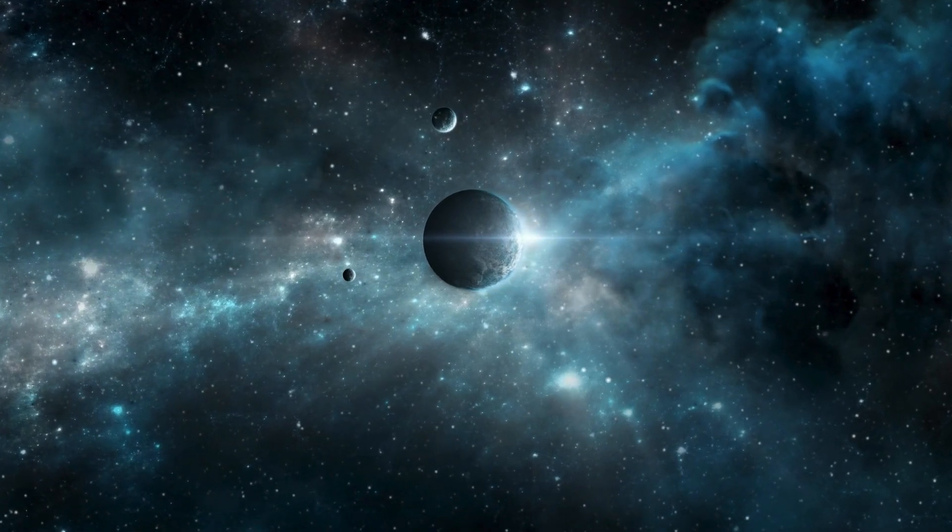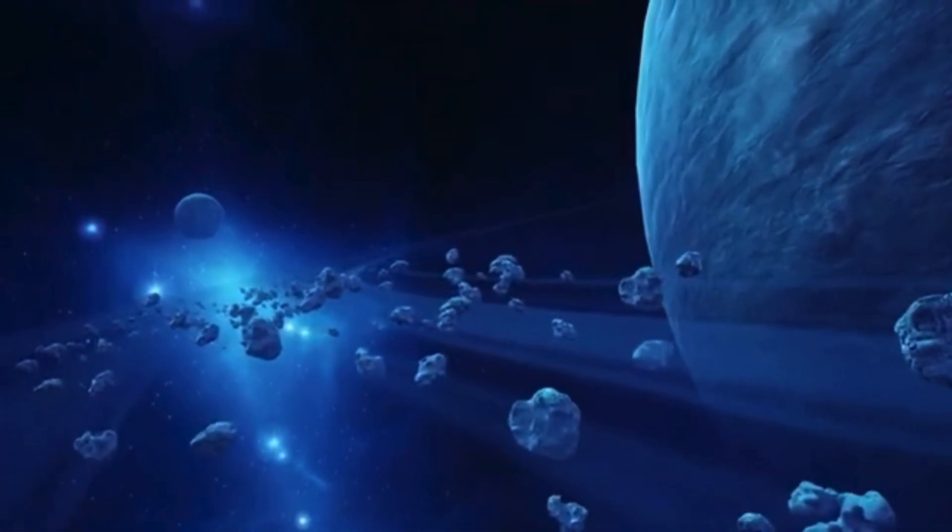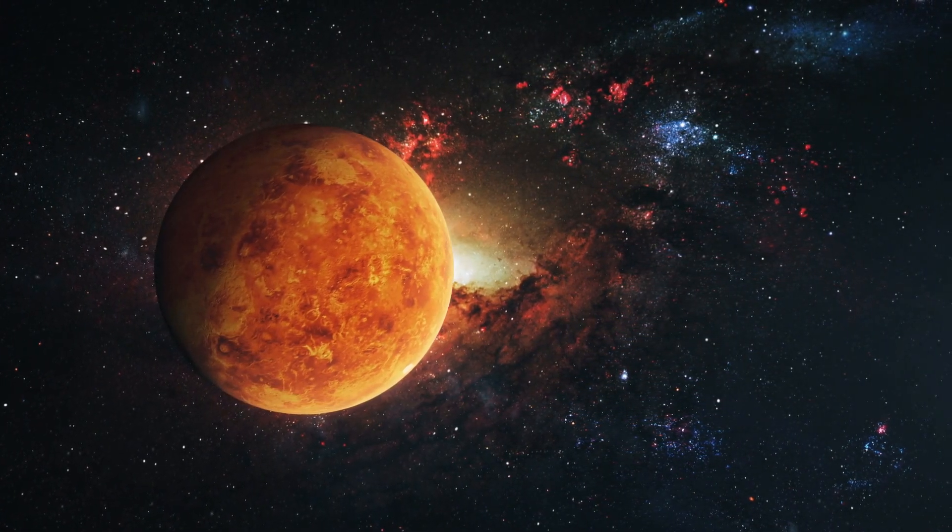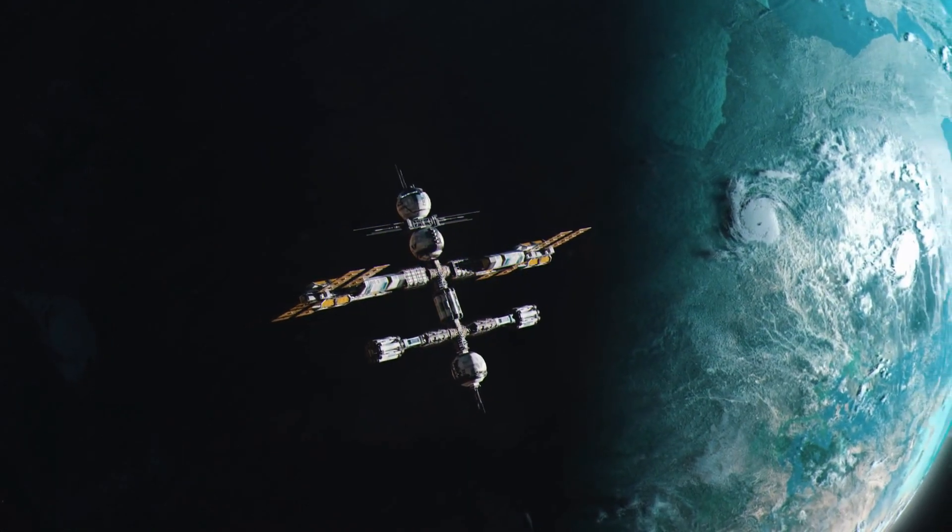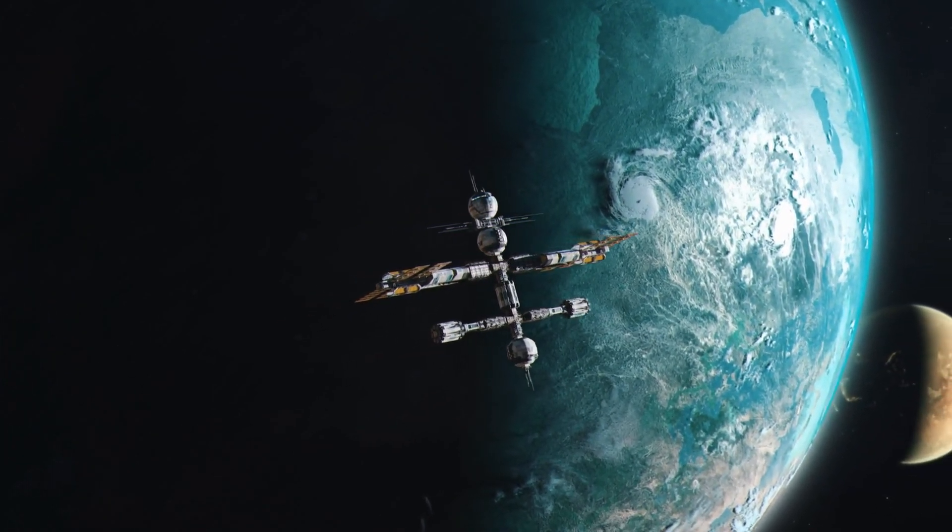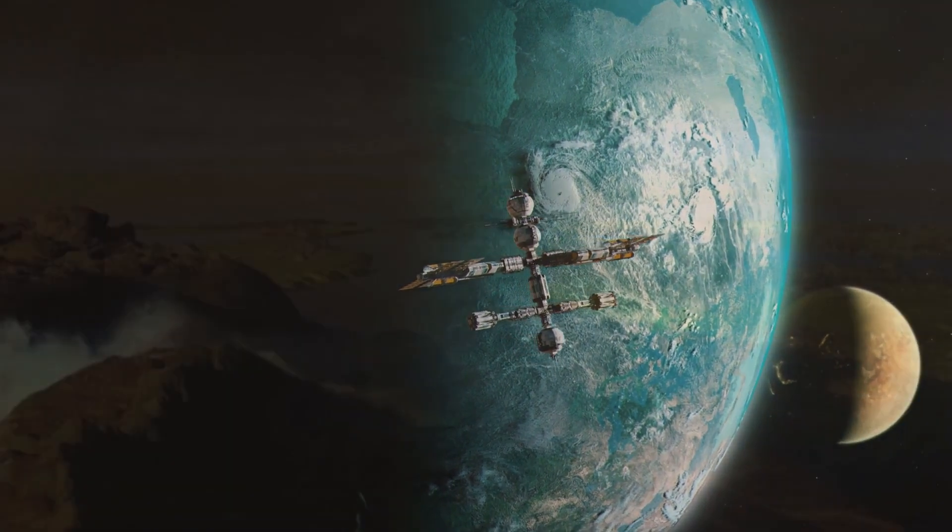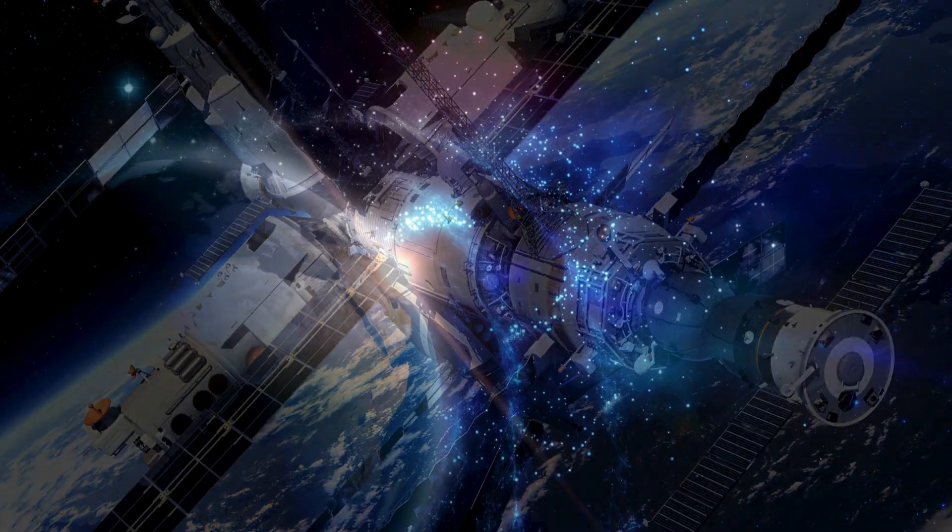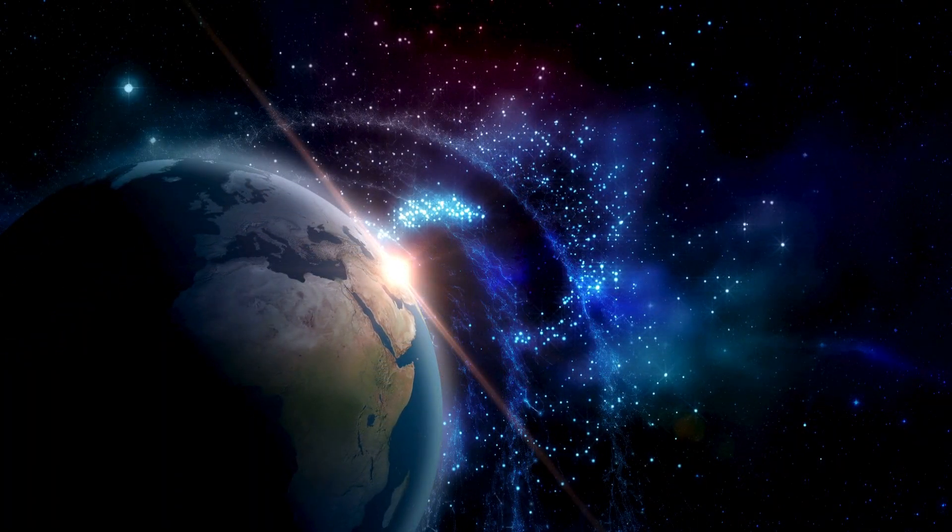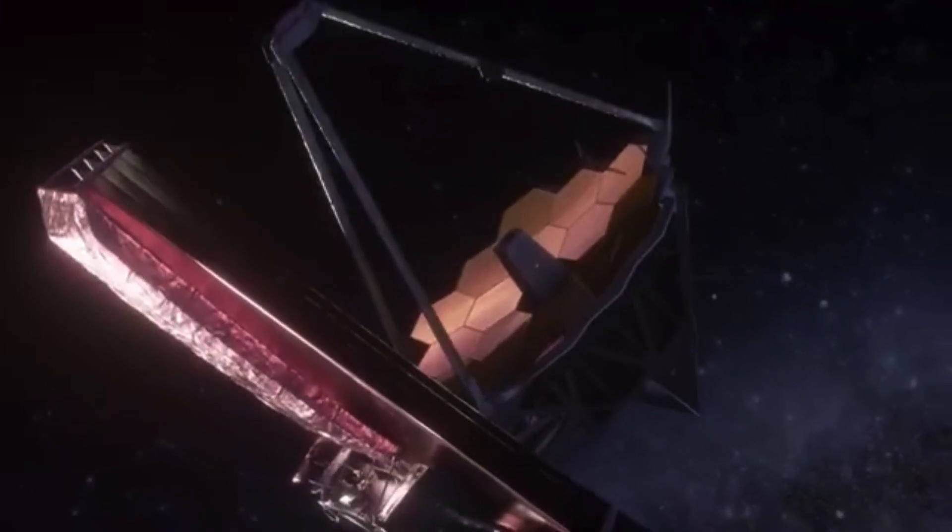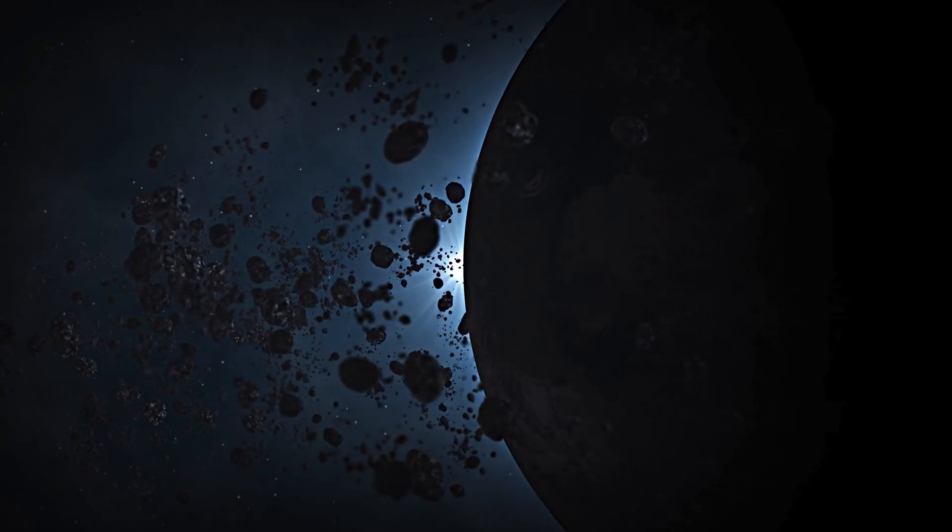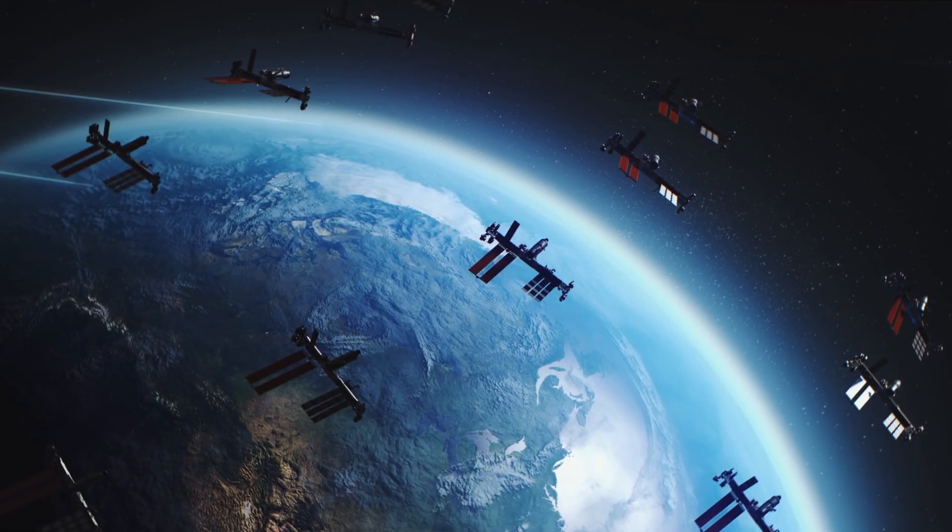Discovered in 2016 by astronomers using the European Southern Observatory's HARPS spectrograph, Proxima b has since been the subject of intense study. This planet is about 1.17 times the size of Earth, placing it firmly in the category of Earth-like exoplanets. But what really sets it apart is its position within the habitable zone of Proxima Centauri, also known as the Goldilocks zone. This is the region around a star where conditions are just right for liquid water to exist on the planet's surface, a crucial ingredient for life as we know it.